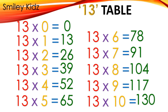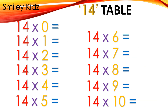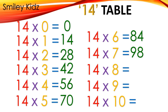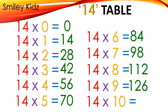13×10=130. Table 14: 14×0=0, 14×1=14, 14×2=28, 14×3=42, 14×4=56, 14×5=70, 14×6=84, 14×7=98, 14×8=112, 14×9=126, 14×10=140.